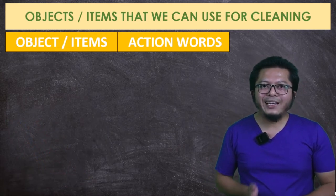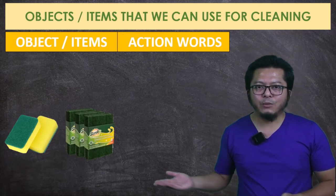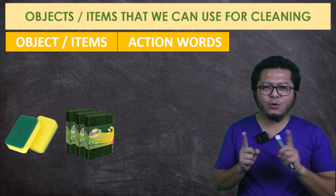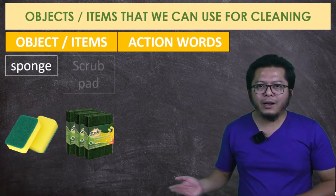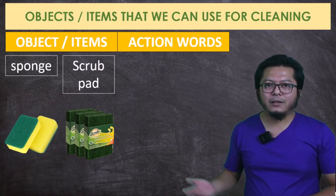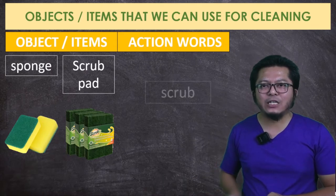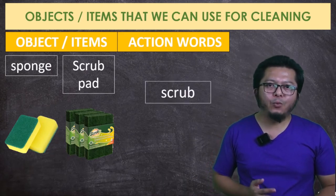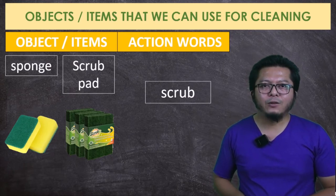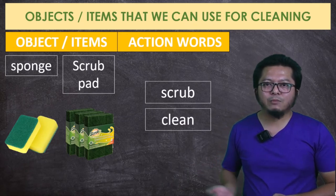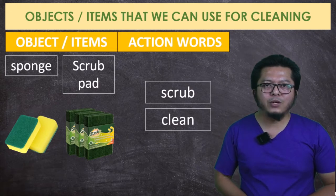Another cleaning object we need to learn is the sponge and scrub pad. The brown one is a scrub pad and the other one is a sponge. The action word that we can use with these objects is to scrub. You don't wipe with a scrub pad — you scrub things, usually something that is very hard to clean. You can also clean things with a sponge. Both action words — scrub and clean — can be used with these cleaning objects.